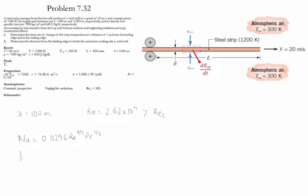With this information, the convection coefficient at the trailing edge is equal to 12.4 watts per meter kelvin. Substituting into the equation for the change of temperature with respect to time, we find it equals negative 1.47 Kelvin per second. So at this position, the temperature drops by about 1.5 Kelvin per second, which is considerably higher than at 1 meter where it was close to 1 Kelvin per second.